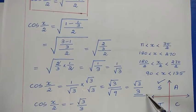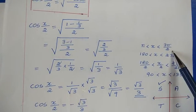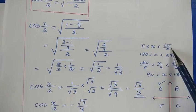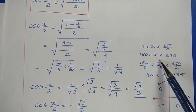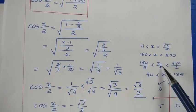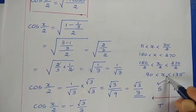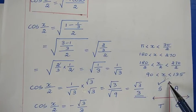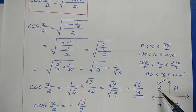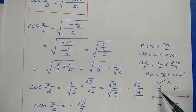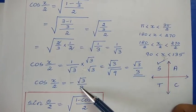We need to determine the sign. Since x is in the third quadrant: 180° < x < 270°. Dividing by 2: 90° < x/2 < 135°, so x/2 is in the second quadrant. In the second quadrant, sine and cosec are positive, while cosine and other ratios are negative. So cos(x/2) = −√3/3.